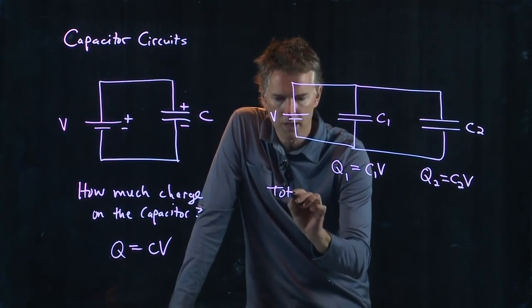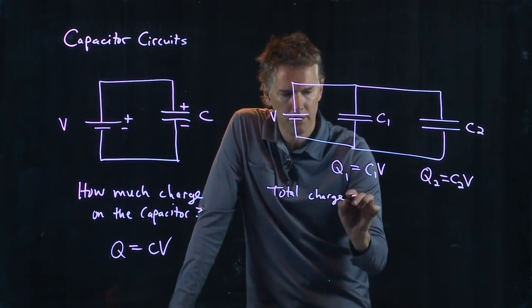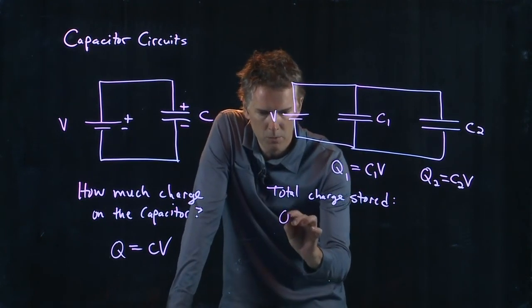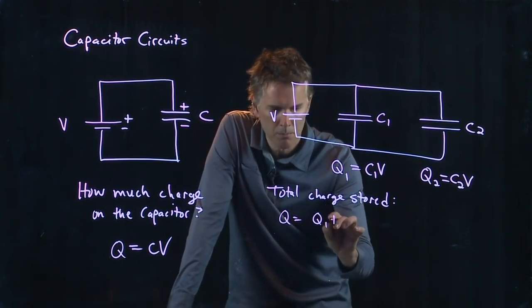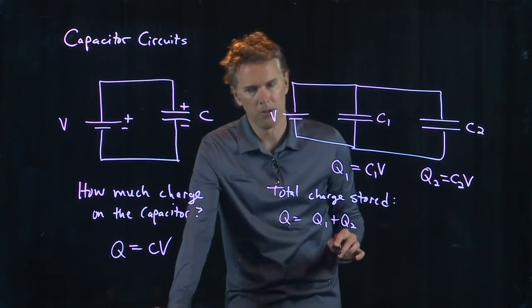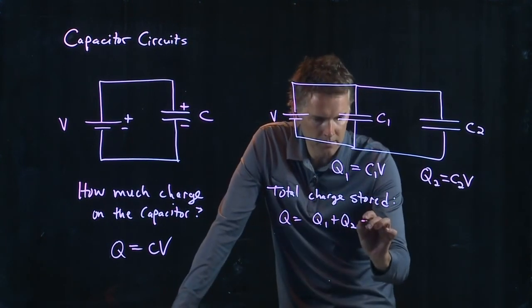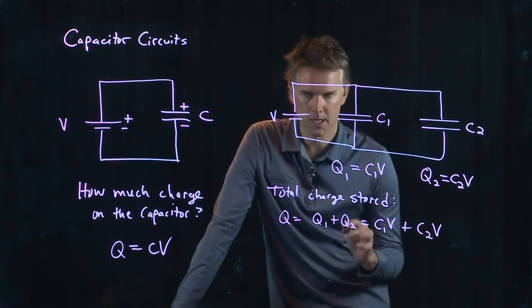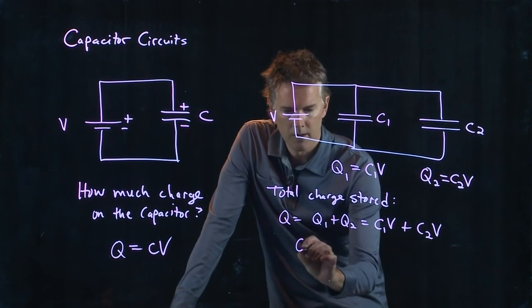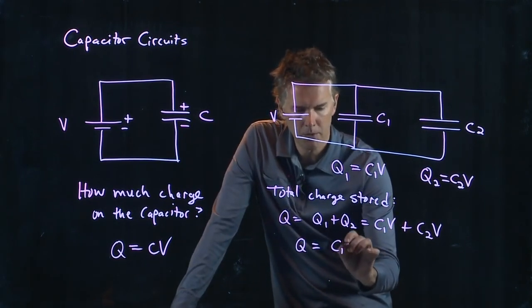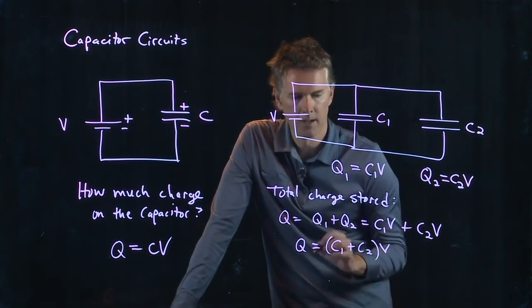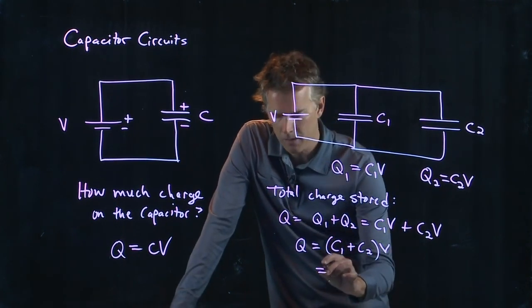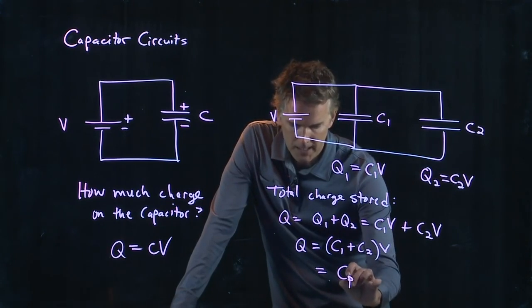So let's ask the question, what is the total charge that is stored on the positive plates of those capacitors? Well, we just add it up. Total Q is going to be Q1 plus Q2. Piece of cake. What is Q1? We said it's C1V. What is Q2? It is C2 times V. And now I have a common V in both of those, so I can factor it out. And the total charge is just C1 plus C2 times V.